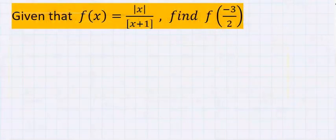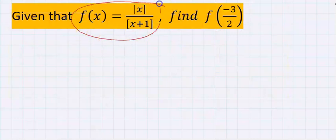Let's consider this question. Given that f of x is equal to |x| over [x+1], find f of minus 3 over 2.